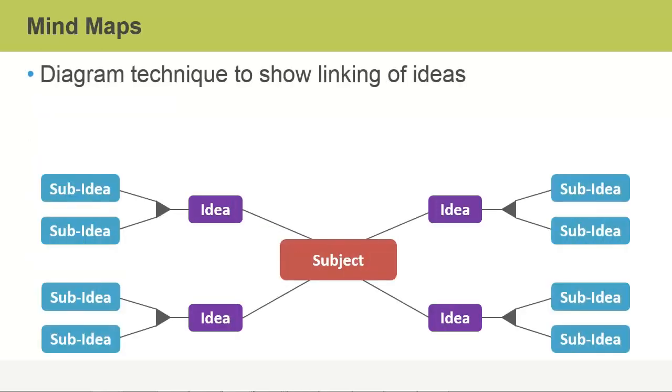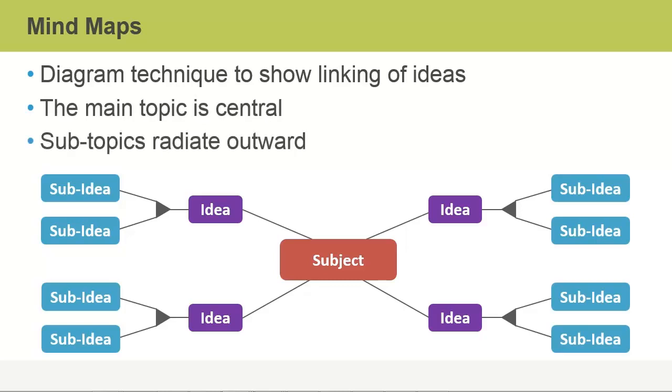A mind map is a diagrammatic technique used to visually present the linking of ideas. A mind map is typically generated around a single topic with the main topic being central to the diagram. Major topics related to the main topic are connected directly to the main, with subtopics and other concepts radiating outward. Mind maps can incorporate words, images, numbers, and color and can present an overview of a central topic with large amounts of related information.